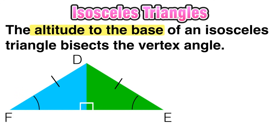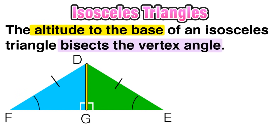Let's visualize what this means. If we call this triangle DEF and we draw the altitude from angle D to the base of the triangle, we make a new point called G. We can say that this altitude bisects the vertex angle, meaning angle D is cut into two congruent halves.